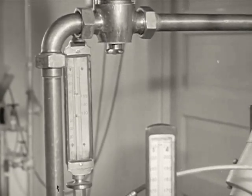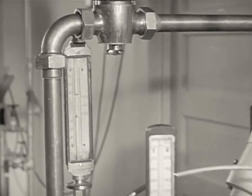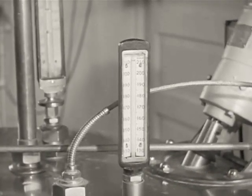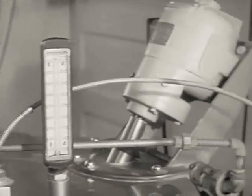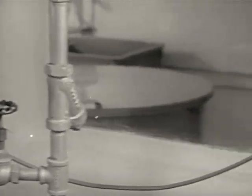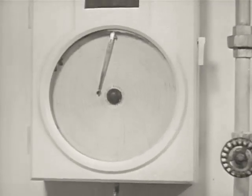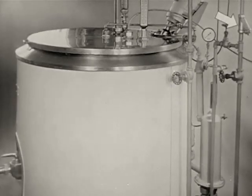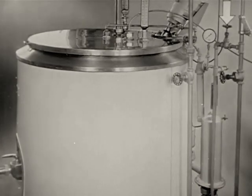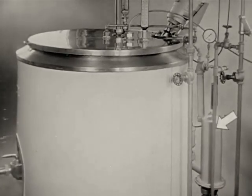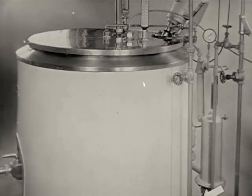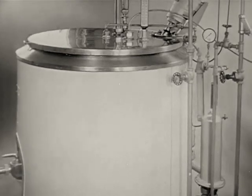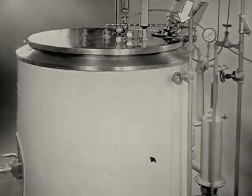This pasteurization vat has three thermometers. On the left, an indicating thermometer, an airspace thermometer, and a recording thermometer and its chart. The airspace heater assembly is made up of a steam strainer, a control valve, a condensation leg with steam trap, an auxiliary water trap, and a steam gauge. This unit provides a flow of clean, dry steam to the inside of the pasteurizer.